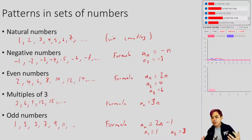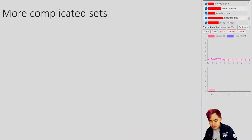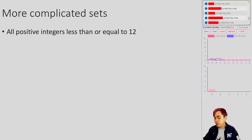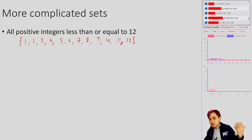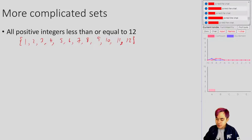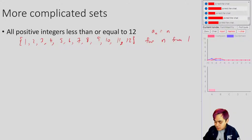There are different ways of describing a pattern that you found, and it's not always possible to write down a single formula. Sometimes it's writing down multiple formulas and saying when one works and when the other works. Let's take a look at a few more complicated sets. All positive numbers less than or equal to 12 - this is the set 1, 2, 3, 4, 5, 6, 7, 8, 9, 10, 11, 12. Unlike the other sets, this doesn't go on forever - it only goes on for 12 numbers. Here a_n is equal to n, but only for n from 1 to 12.